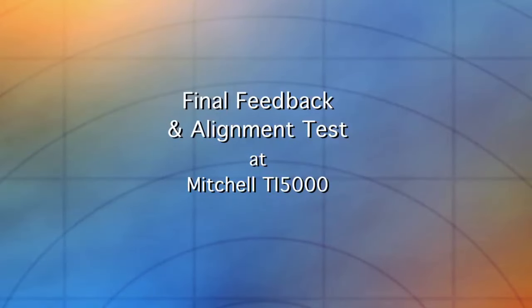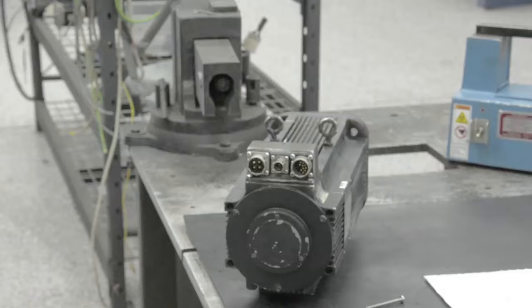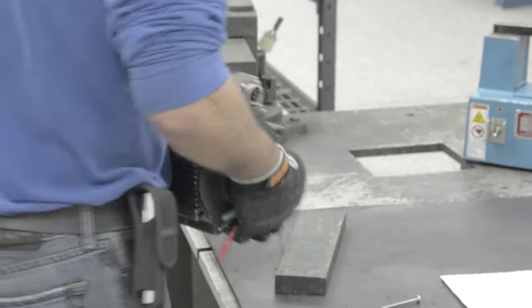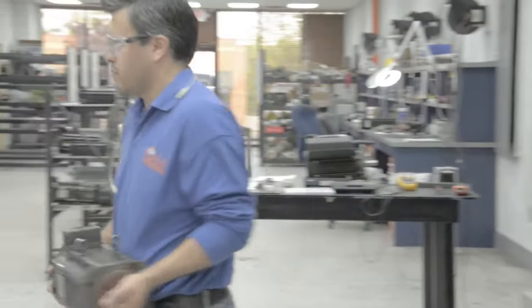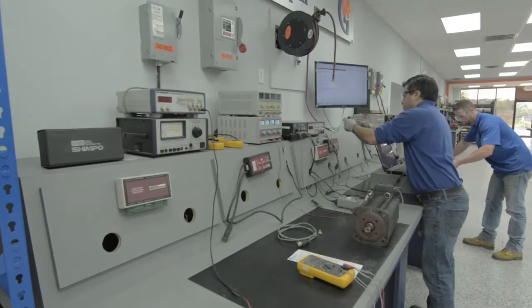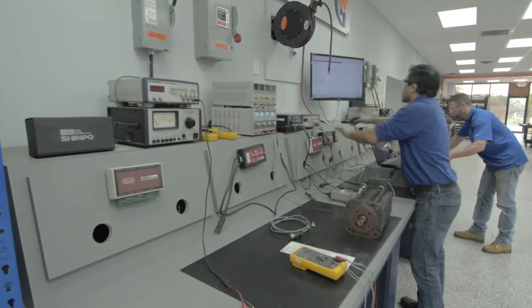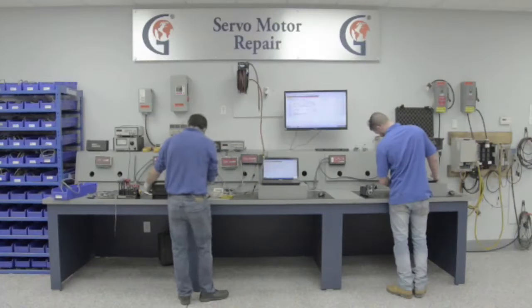Final test at the TI-5000 station. Now that our servo motor has been completely cleaned, dried, had the encoder repaired and tested, and new bearings, it's ready for final testing. Before the final cleaning and paint, we'll retest at the Mitchell Electronics TI-5000 station to ensure the encoder is working properly and to verify its alignment for the final test.